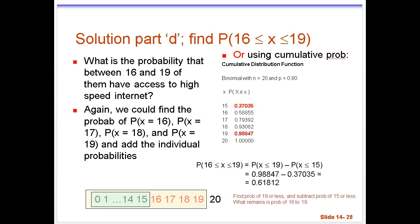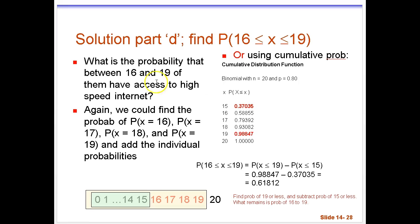So flicking over here to the solution to part D, we're looking for, as we've said, probability between 16 and 19.